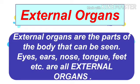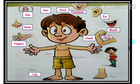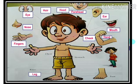Some external organs are single and some are in pairs. Our head, nose, mouth, and tongue are single, while our eyes, ears, hands, and legs are in pairs. Now let us have a look at a picture. Read the mentioned body parts loudly with me: head, hair, forehead, eyes, ears, nose, mouth, cheek, hand, fingers, chest, stomach, knee, leg, and foot.